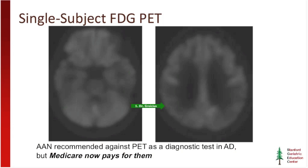Despite that firm recommendation, Medicare has been paying for FDG-PET for more than five years if you specify the clinical question of frontotemporal dementia versus Alzheimer's disease. I almost never order FDG-PET scans myself. In very rare cases it can prove a little bit helpful as one additional variable, but for the most part at the single-patient level, FDG-PET is not a very informative measure.